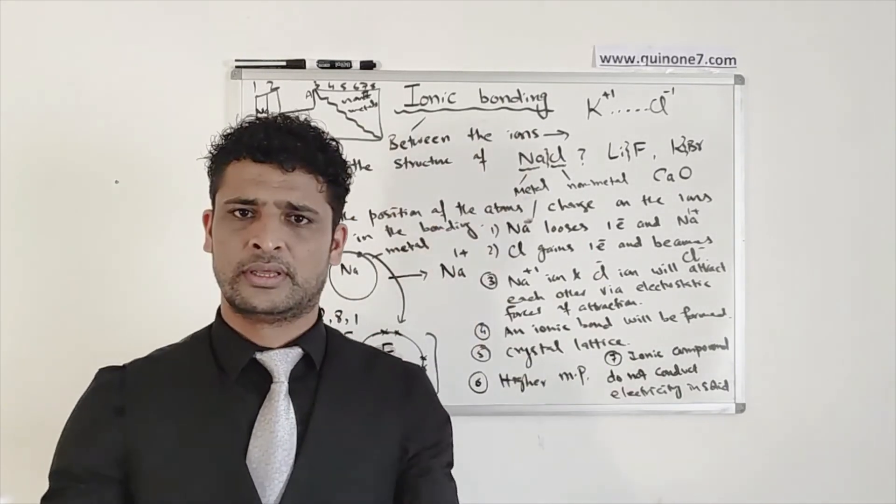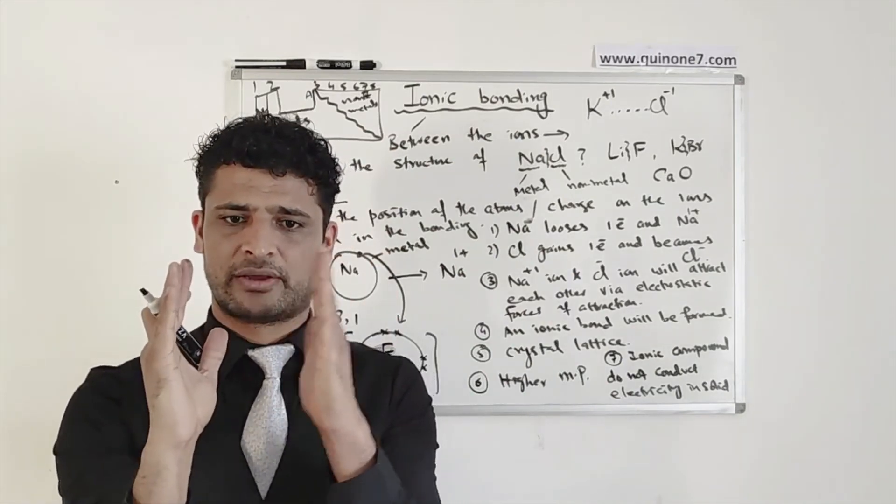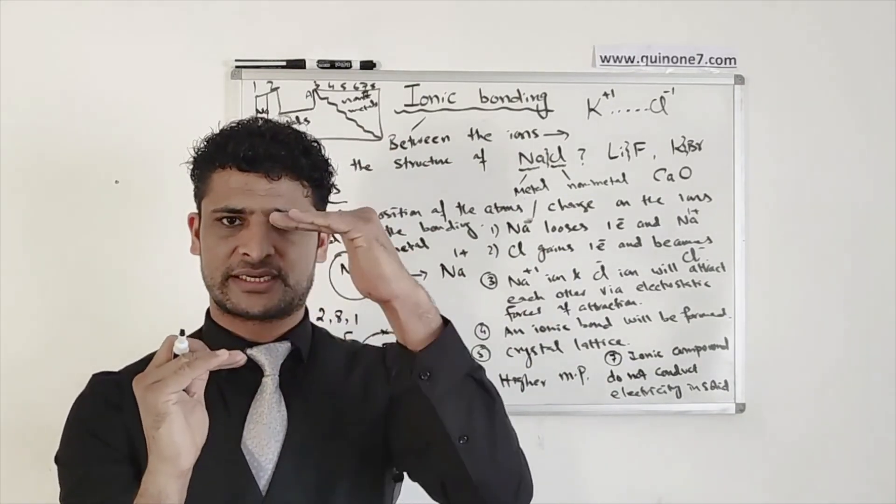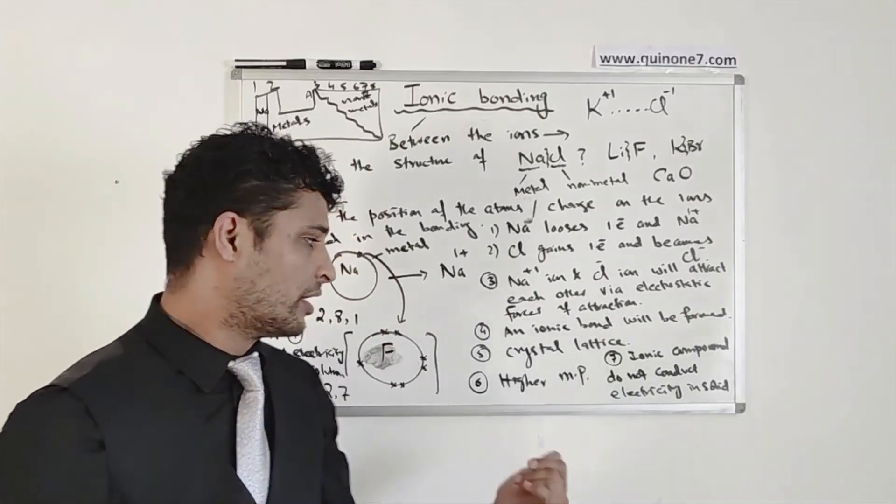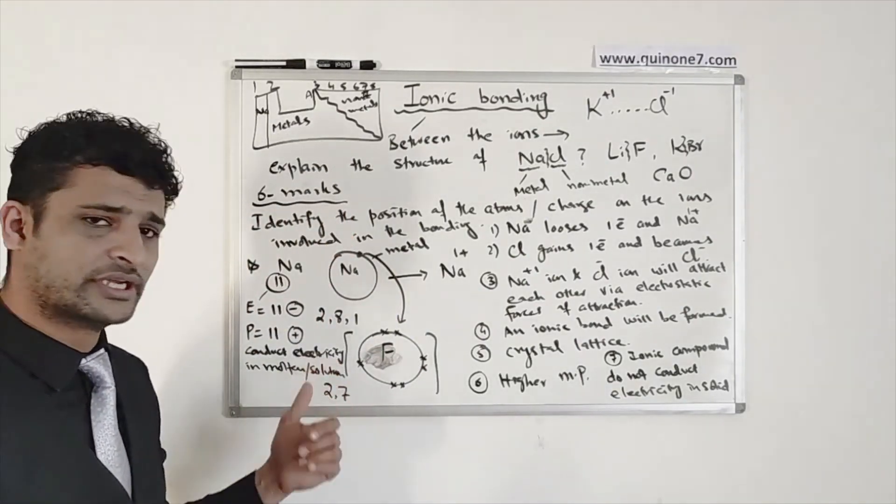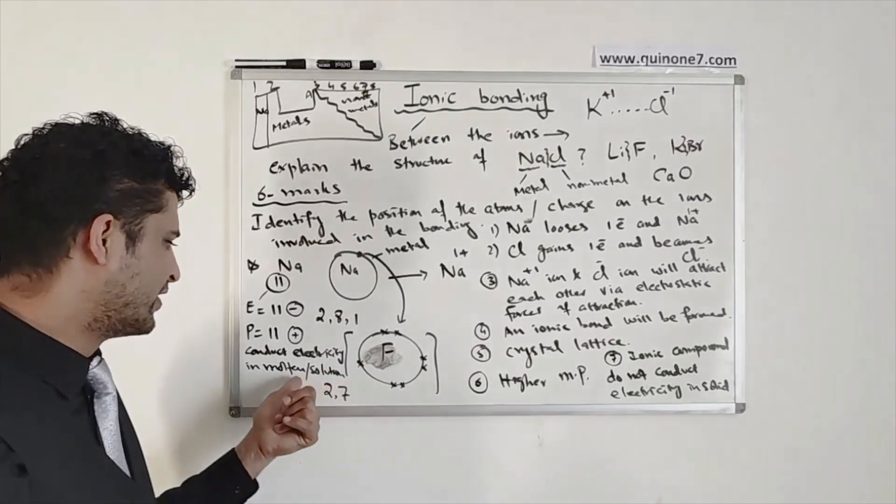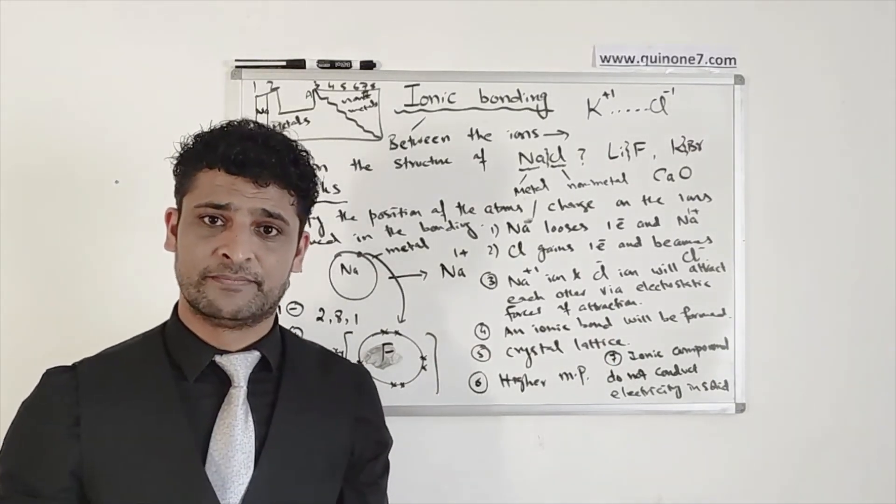Conduct electricity in molten or in the solution form. When you make a crystal, the particles, sodium ion and chloride ion, which makes a crystal lattice, they can't move. So in the solid form, they cannot conduct electricity. But obviously, in the molten, when they are melted or when they are in the solution form, they can conduct electricity.